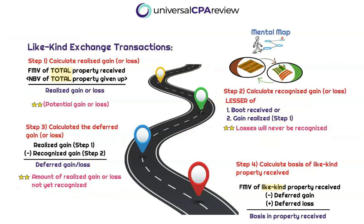Now diving into the meat and potatoes of like-kind exchange recognition. If you're going to take anything from this lecture, this is where you need to really listen up, because we're going to now pull out our mental map for like-kind exchanges. Trust me when I say that steps one, two, three, and four in this mental map is going to be your safe space. If you know each of these four steps cold, you're going to be salivating at the mouth at the Prometric Center when you see like-kind exchange transactions come up on your computer screen.